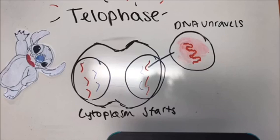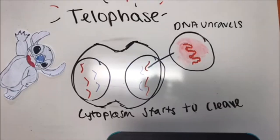In plant cells, instead of a cleavage furrow, a cell plate forms between the separated pieces of chromosome, then dividing the cell into two daughter cells.